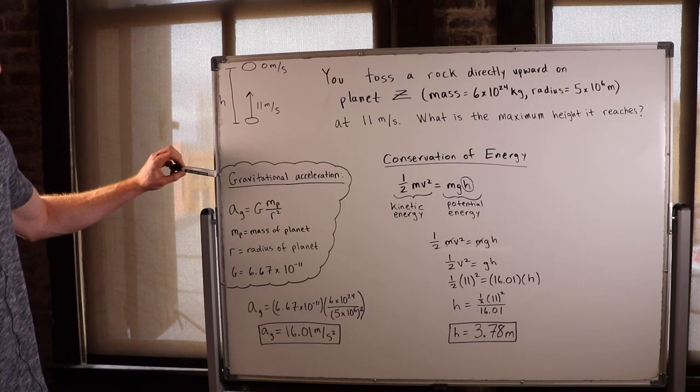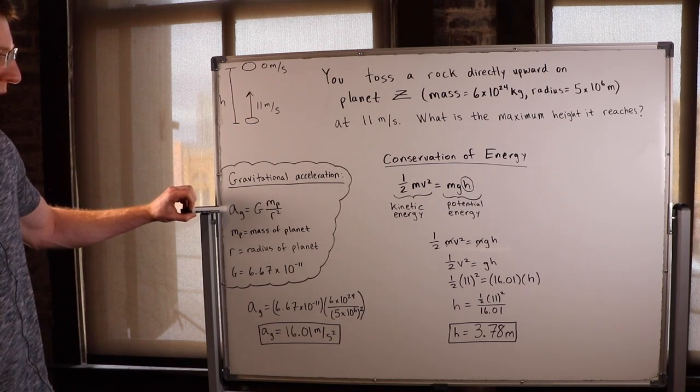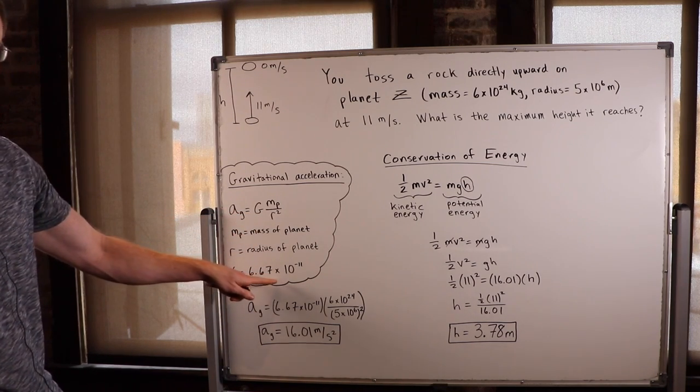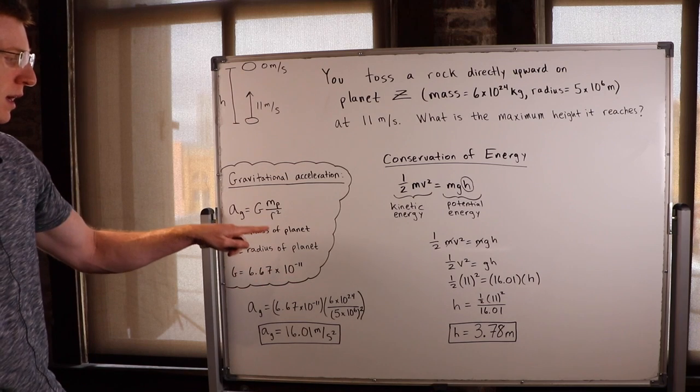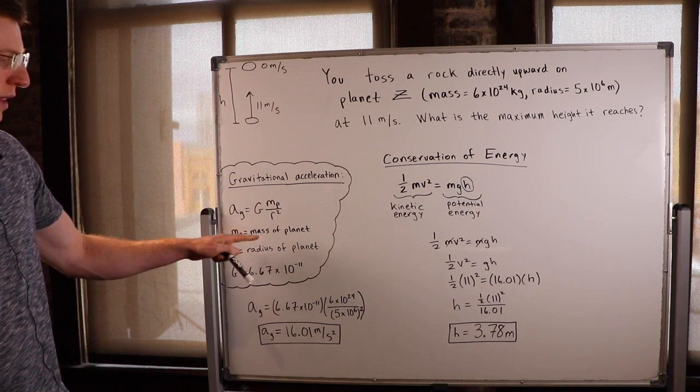So the equation to solve for g on another planet is gravitational acceleration, or A sub g, is equal to this big G, which is just a constant, 6.67 times 10 to the negative 11, times the mass of that planet over the radius of that planet squared.